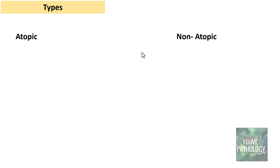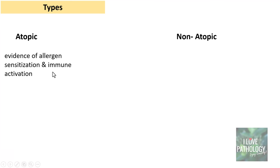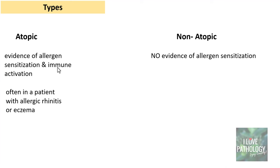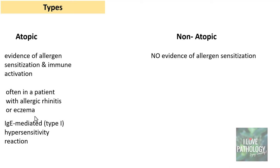Moving on to the types of asthma: broadly, asthma can be categorized into atopic asthma and non-atopic asthma. Atopic means there is evidence of allergen sensitization and immune activation, whereas non-atopic means there is no evidence of allergen sensitization. Atopic asthma develops often in patients with allergic rhinitis or eczema. This type of asthma is classically a type 1 hypersensitivity reaction, which is immunoglobulin E-mediated.